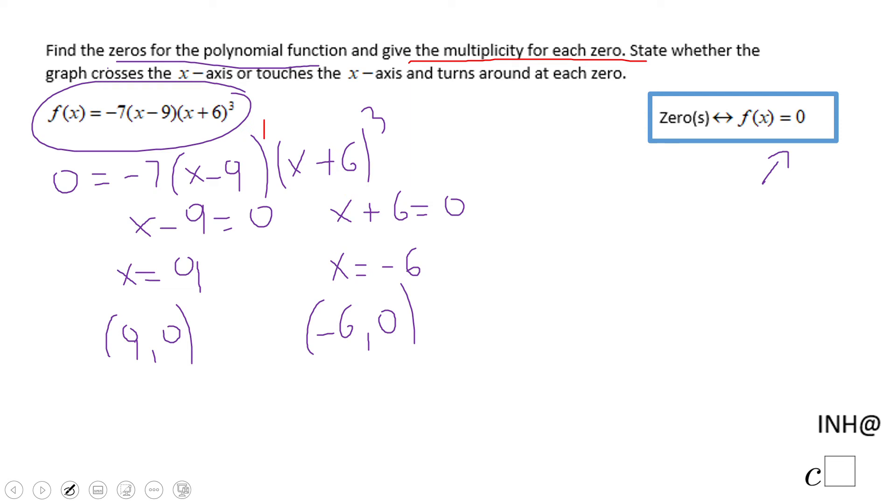This has multiplicity one. That's the way we call it. The multiplicity of X equals nine is one because we have X minus nine to the first power.